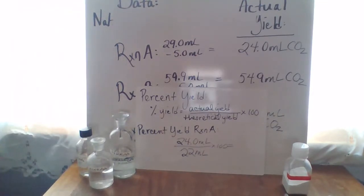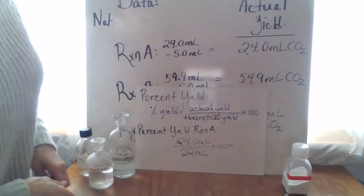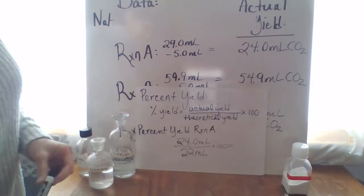We'll take that value, 24 divided by 22 milliliters and come up with a value. And when you get that value, round it to two sig figs.